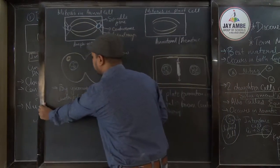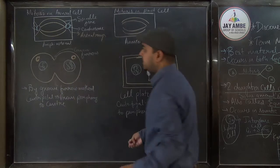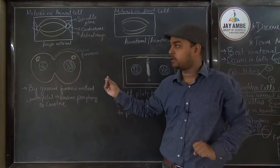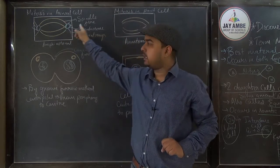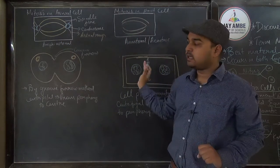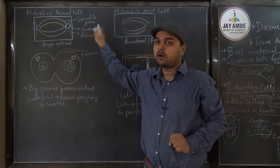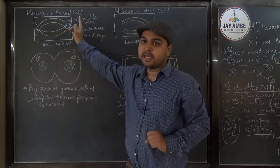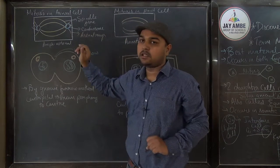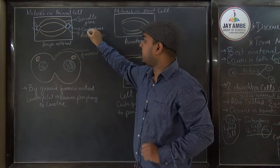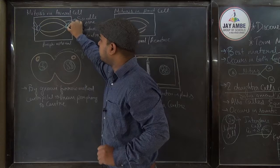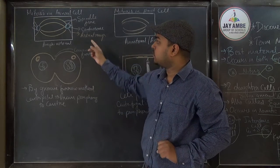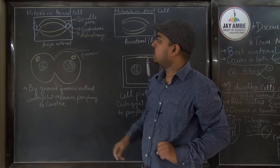Next, let's see how mitosis occurs in animal cells versus plant cells. In animal cells, the blue circular structures are centrosomes, which are made of two centrioles and play a role in cell division. Centrosomes are present, and from them thread-like structures called astral rays emerge on both sides.